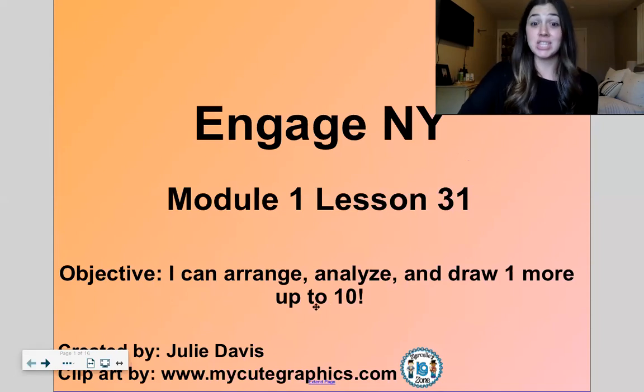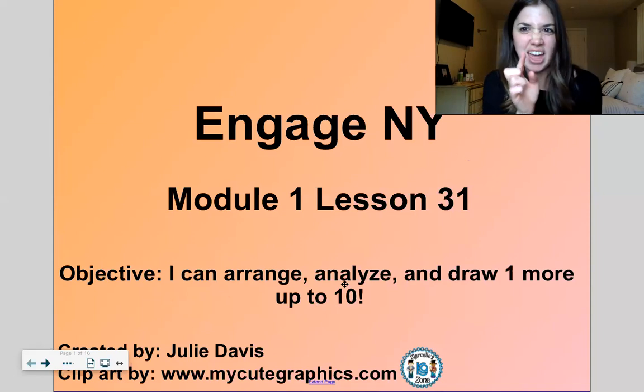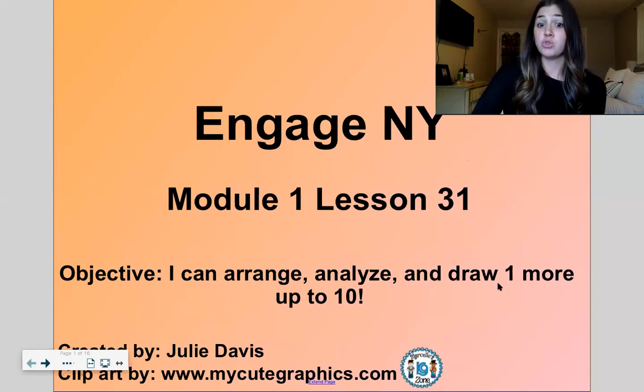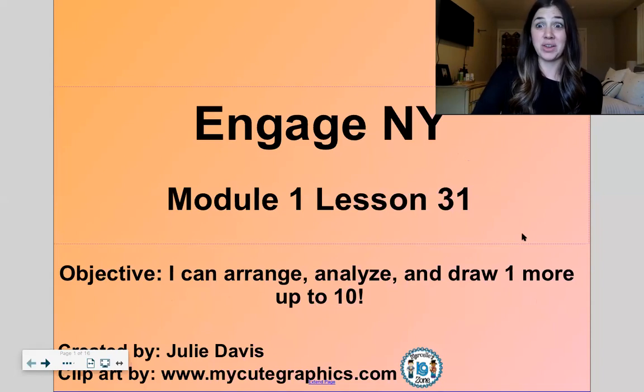Module one lesson 31. Four math lessons left in this module. We are getting so close to the end. You're working so hard. So today's goal: I can arrange, analyze—that's a fancy word for just kind of like look at and think about—and draw one more up to ten.